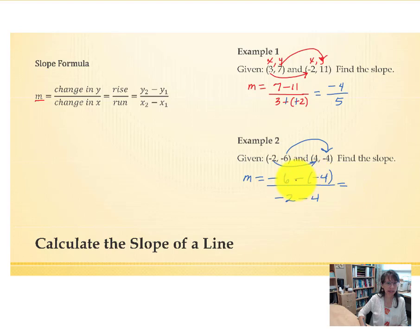When you have subtraction of a negative, that changes to plus. So negative 6 add 4 will give us negative 2 in the numerator. Negative 2 minus 4 gives us negative 6 in the denominator. Whenever it's possible to reduce fractions, we always do that. And with the sign, negative divided by negative will mean we have a positive 1 third slope.